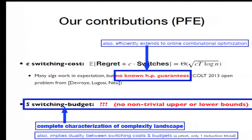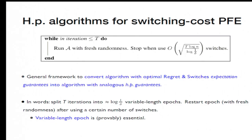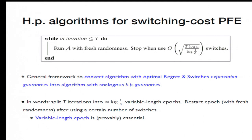So I'll talk about both these contributions. The first one is the high probability algorithms. So we give more than just an algorithm, we actually give a framework to produce these algorithms. It takes in an algorithm that's good in expectation, and I mentioned there's already several, and it outputs an algorithm that's good with high probability. The idea is quite simple, so we split the T iterations into a certain number of variable length epochs.